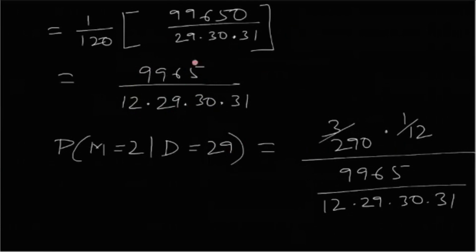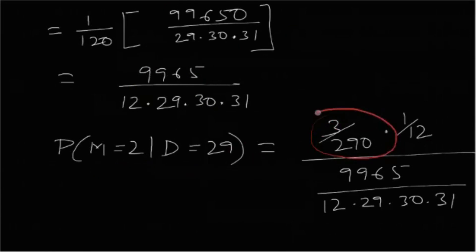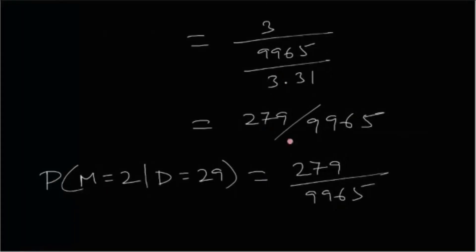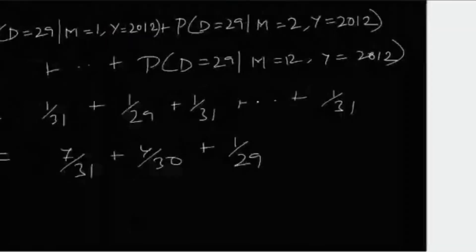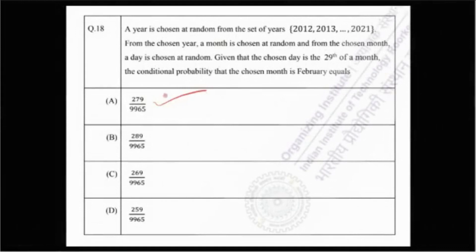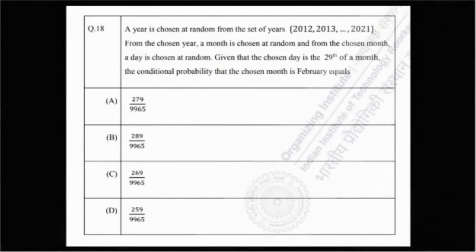Coming back to the original problem: P(M=2|D=29) = [P(D=29|M=2) × P(M=2)] / P(D=29) = (3/290) × (1/12) divided by 9965/(12×29×30×31). After calculation, the answer is 279/9965, so option A is the correct answer. The problem is solved completely — see you next time.